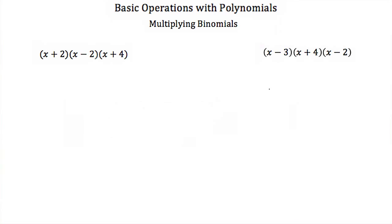Now let's talk about multiplying multiple binomials or multiple polynomials. You would do this the same way, but if you have more than one — say you have three — the way to do this is just do two at a time. So we'll take these first two and ignore the third one for a little while.